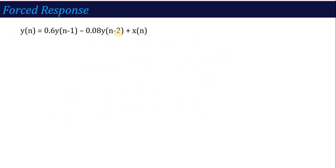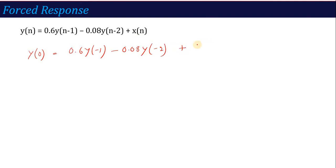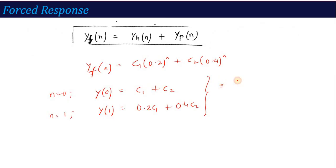From the given difference equation, putting N = 0 to calculate Y(0): Y(0) = 0.6·Y(-1) - 0.08·Y(-2) + delta(0). Since initial conditions are zero, Y(-1) and Y(-2) vanish. And delta(0) = 1. Therefore Y(0) = 1, which means our first equation becomes C₁ + C₂ = 1.